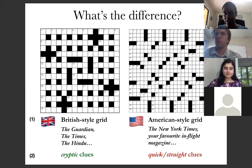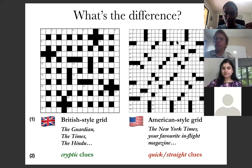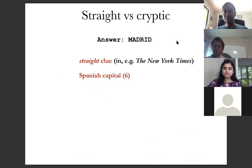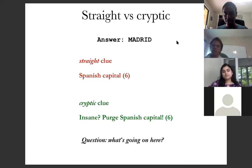More importantly, on the left the answers are given by cryptic clues, and on the right the answers are given by what are known as quick or straight clues. Suppose the answer to a clue was 'Madrid' — in the New York Times, the clue might be 'Spanish capital, six letters' or 'Capital of Spain, six letters.' That's a straight clue. But a cryptic clue would look like this: 'Insane purge, Spanish capital, six letters.'